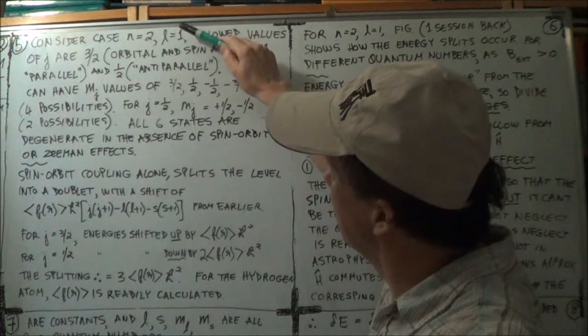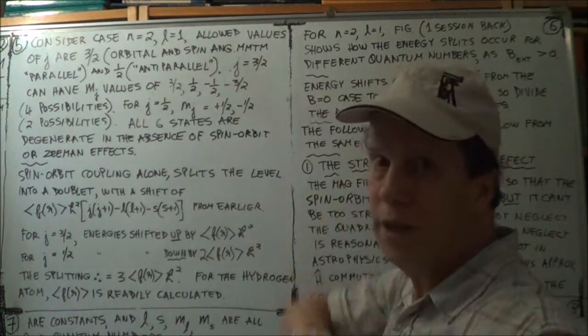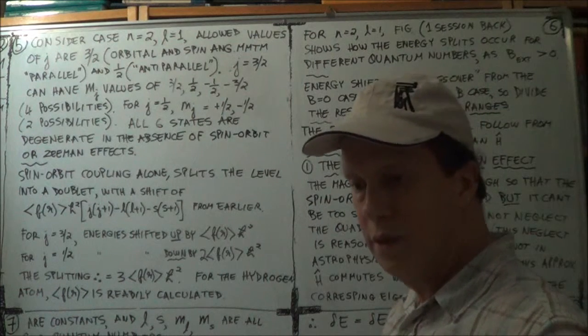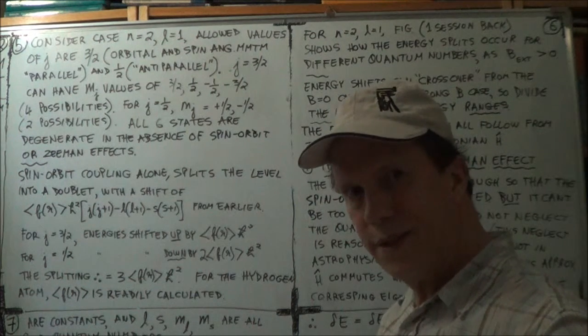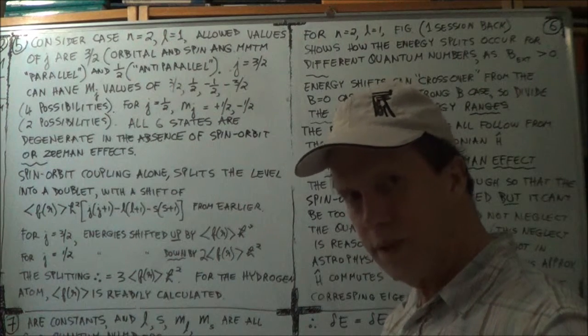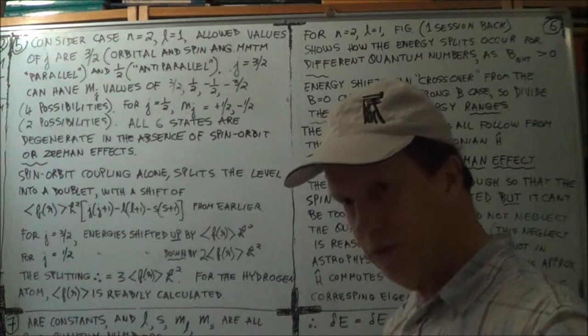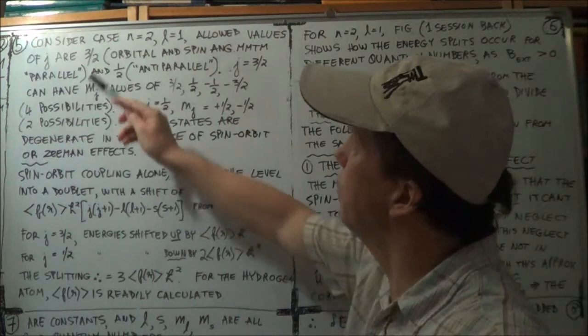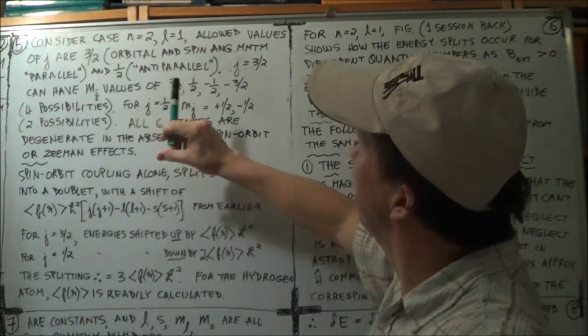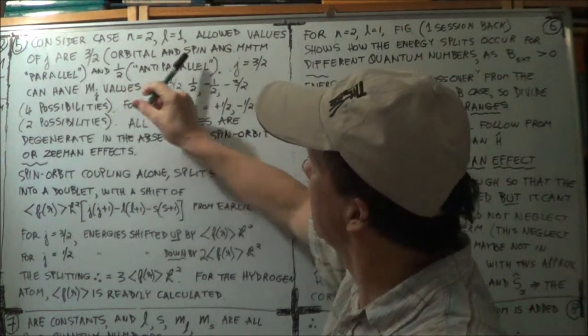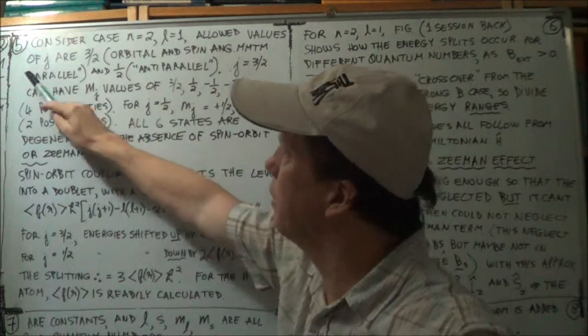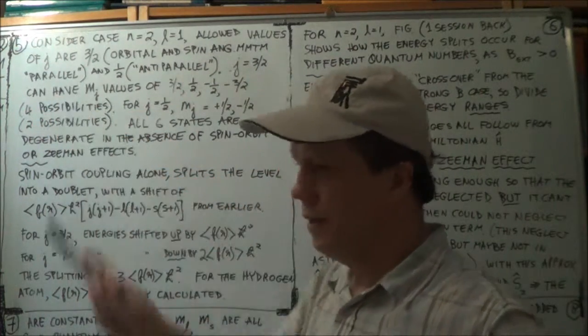So if L is 1, the allowed values of J are then L plus or minus S. So 1 plus or minus a half. So 3 over 2 or a half. Now if it's 3 over 2, as I was saying earlier. So that would correspond to the spin angular momentum being parallel, in inverted commas.